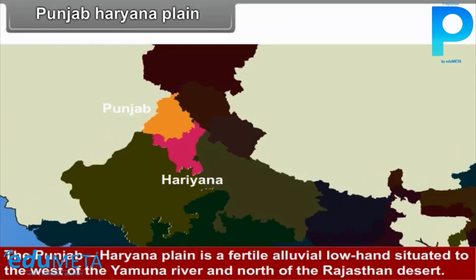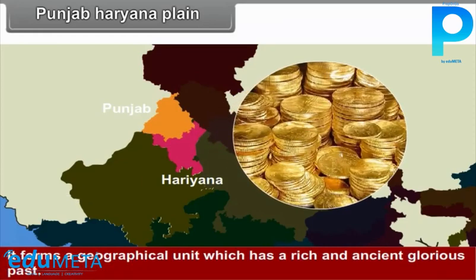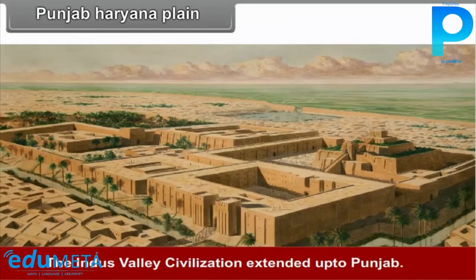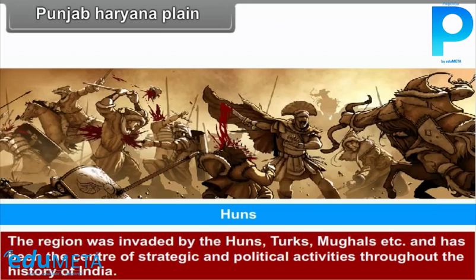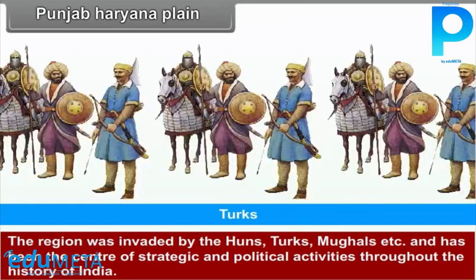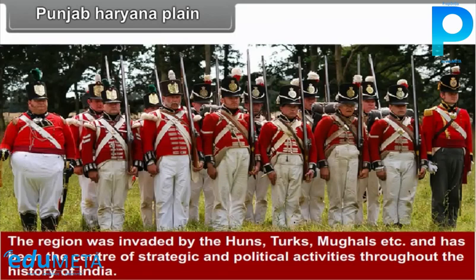The Punjab-Haryana plain is a fertile alluvial lowland situated to the west of the Yamuna River and north of the Rajasthan Desert. It forms a geographical unit with a rich and ancient glorious past. The Indus Valley Civilization extended up to Punjab, and Kurukshetra of Mahabharata fame is also located here. The region was invaded by the Huns, Turks, Mughals, and others, and has been the center of strategic and political activities throughout the history of India.